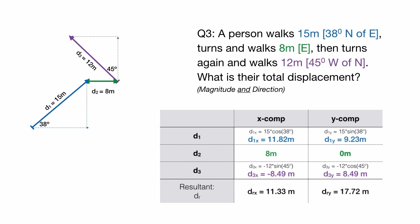And then we go through and add up all the components in our x. That gives us 11.33. And then all the components in our y, which gives us 17.72.